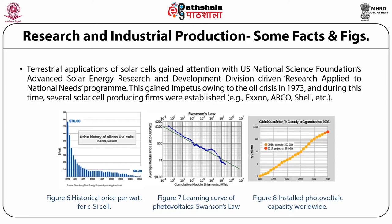Figure 6 shows the historical price per watt for C-silicon cells. Figure 7 shows the learning curve of photovoltaics, that is Swanson's law, and Figure 8 shows the installed photovoltaic capacity worldwide. In the 1990s, polysilicon cells gained much popularity. Although the efficiency is lower than that of monosilicon, the low cost drives research activities. By 2000, polysilicon cells became prominent in the low cost panel market. However, owing to low efficiency, monosilicon cells have gained importance. Because of high silicon prices in 2004–2008, silicon consumption was lowered.